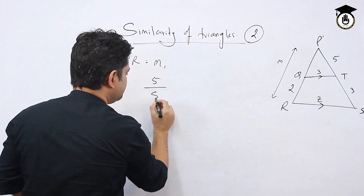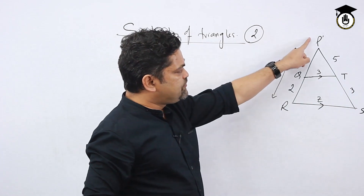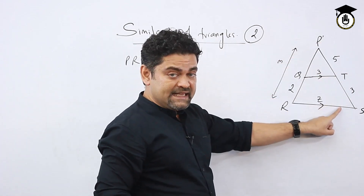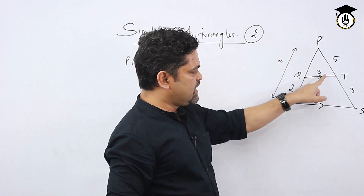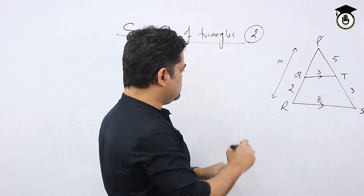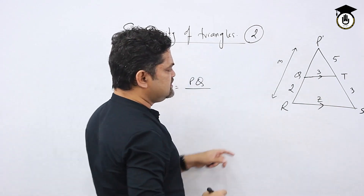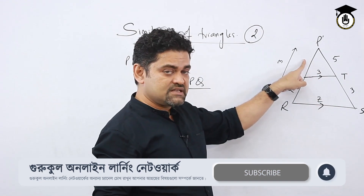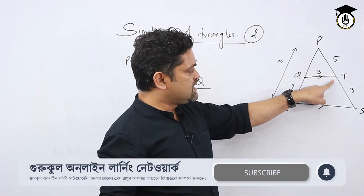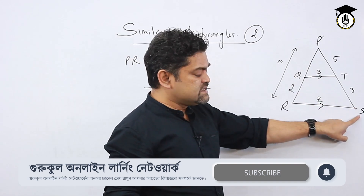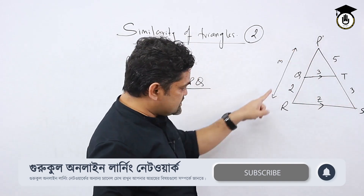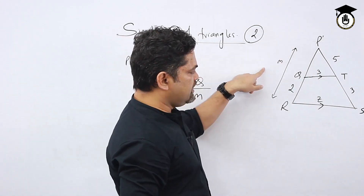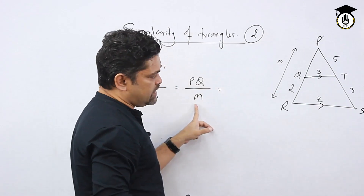Now considering angle T: angle T equals angle X, and angle T's opposite side is PQ. I need to write the letter here because there is no number — I need to find it. Angle T's opposite side is PQ, and angle T equals angle S, so its opposite side will be PR, which is given as M.